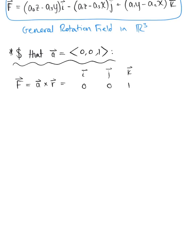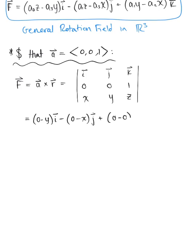The matrix has i-hat, j-hat, k-hat in the first row; 0, 0, 1 in the second row; and x, y, z in the third row. Computing this cross product, we get (0 − y) i-hat, minus (0 − x) j-hat, plus (0 − 0) k-hat. This leaves us with −y i-hat, and since negative times negative gives positive, +x j-hat, and 0 k-hat. Therefore the general rotation field here is (−y, x, 0).